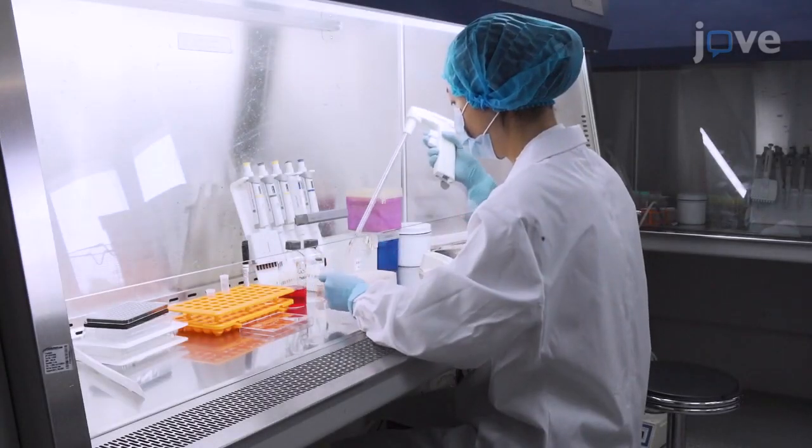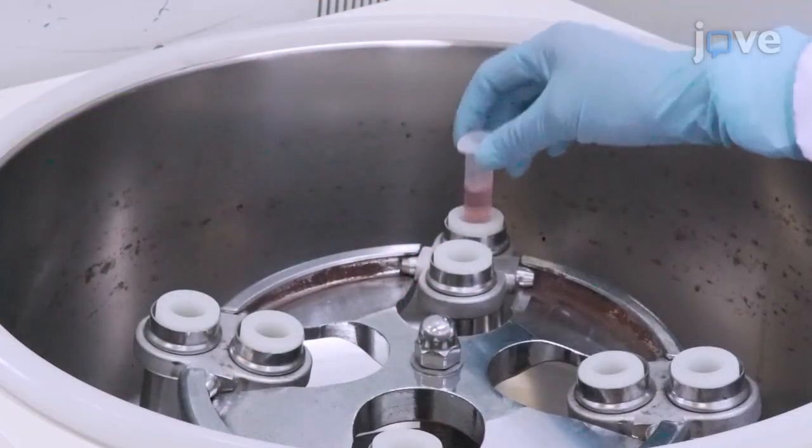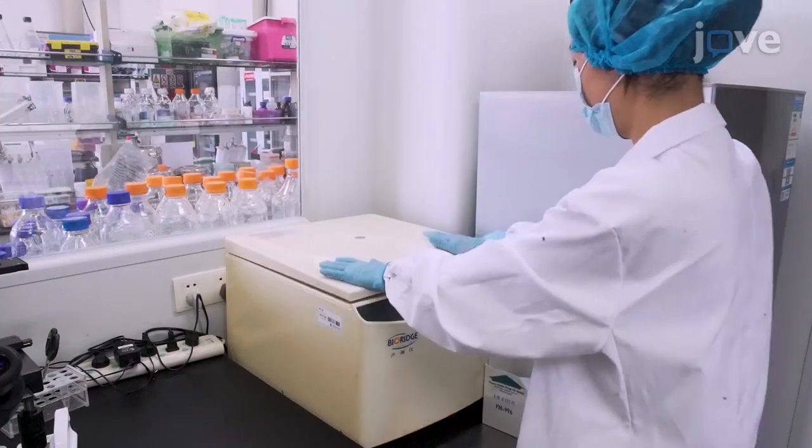Begin by collecting the glioma stem cells or GSCs from the culture medium and centrifuging them at 70 times G for 3 minutes at room temperature.